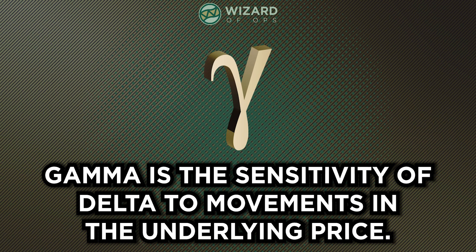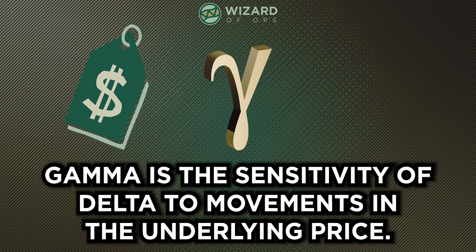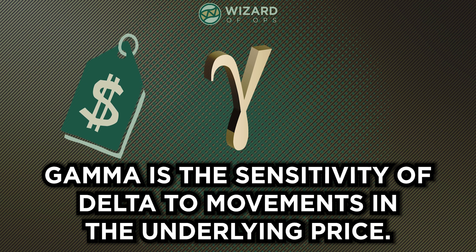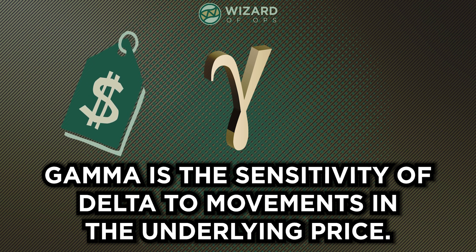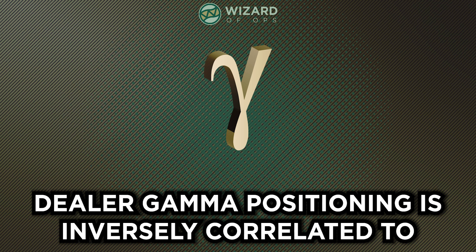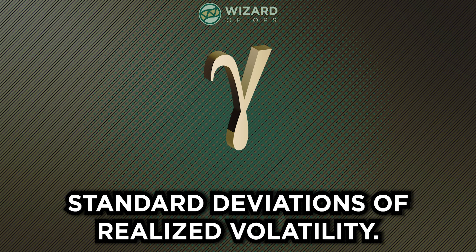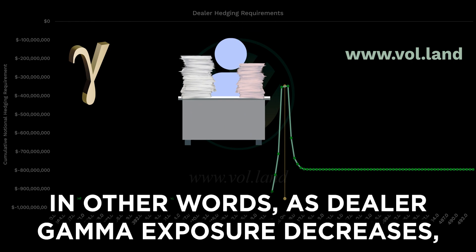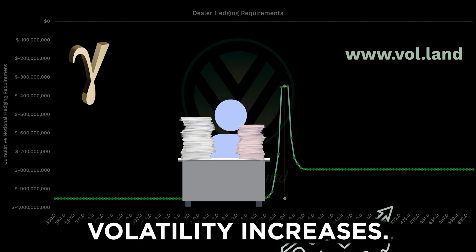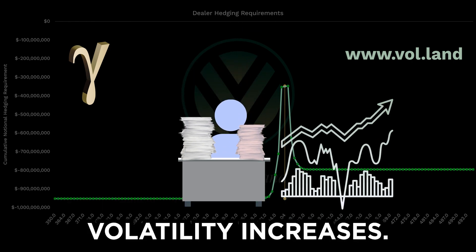Gamma is the sensitivity of delta to movements in the underlying price. Dealer gamma positioning is inversely correlated to standard deviations of realized volatility. In other words, as dealer gamma exposure decreases, volatility increases.